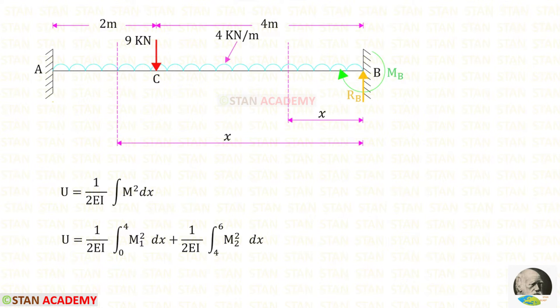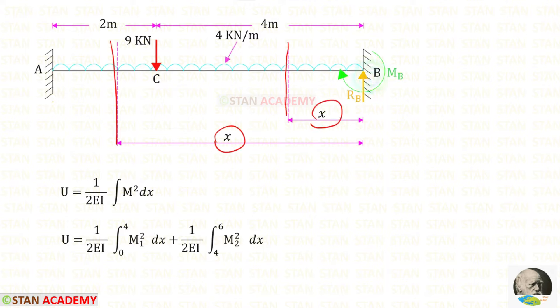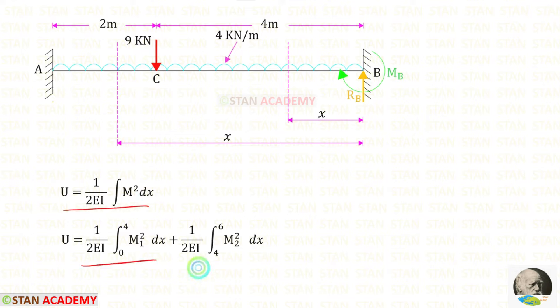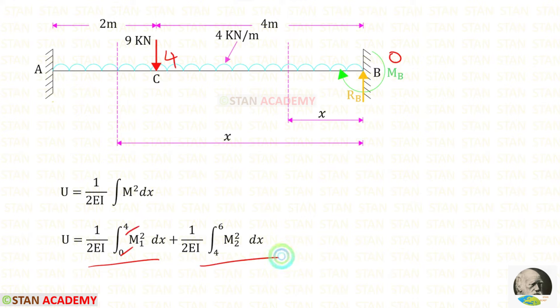I have made two sections, one in CB and one in AC. Both sections are made at a distance of x from point B. Since there are two different parts, we have to split this formula into two parts. The limit for the first integration is 0 to 4 and for the second integration is 4 to 6.